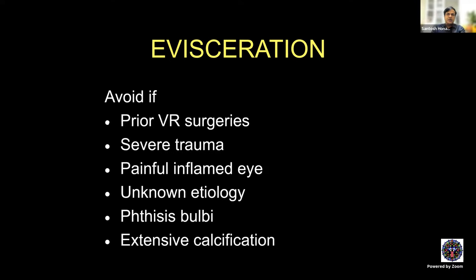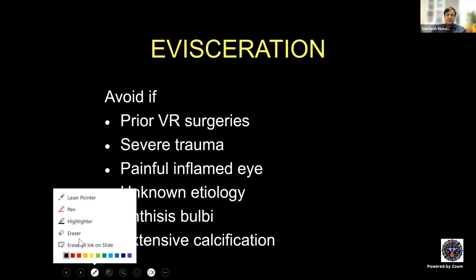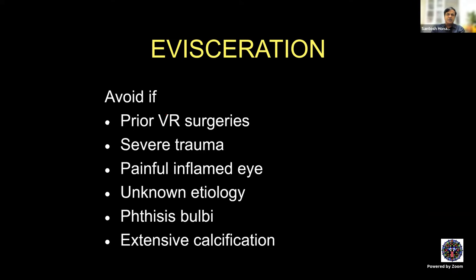You should be very careful with prior VR surgeries. Severe trauma is another consideration — uveal clearance may be incomplete. If there is a ruptured sclera that has been sutured, there will be uveal incarceration. The patient is already predisposed to sympathetic ophthalmia, and if you do evisceration and leave uveal tissue behind, that may be counterproductive.